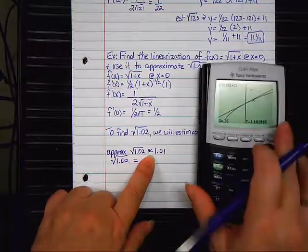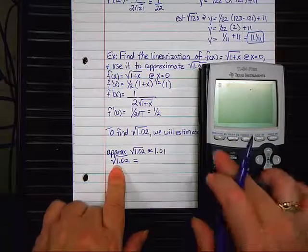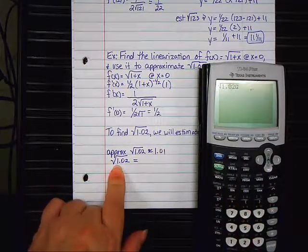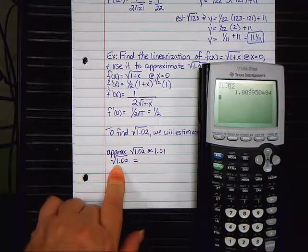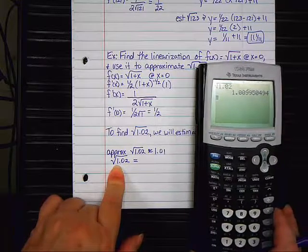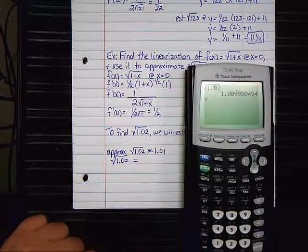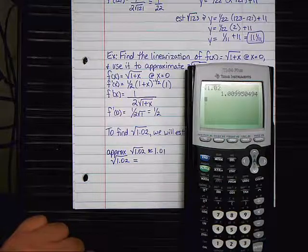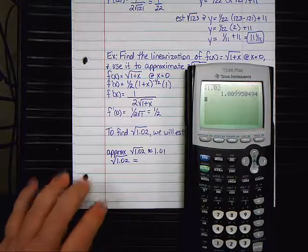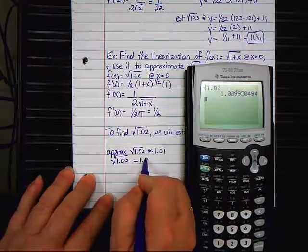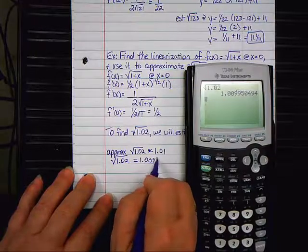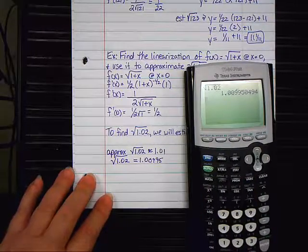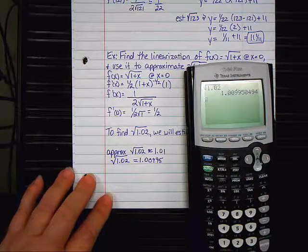Now, let's bring the calculator back and let's find out exactly what the square root of 1.02 is and see how close we are. Look at that. Is that pretty close to 1.01? That's very, very close. It says that it's 1.00995. That's very close.